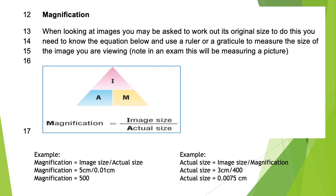If you don't know the actual size, cover the A and you're left with I over M, which means actual size equals image size divided by magnification. For example: magnification equals image size divided by actual size. If the image size is 5 centimeters and the actual size of the cell is 0.01 centimeters, you divide 5 by 0.01, which gives you 500. Notice there are no units — magnification just equals 500, because magnification is how many times larger the image is than the original, not a length.